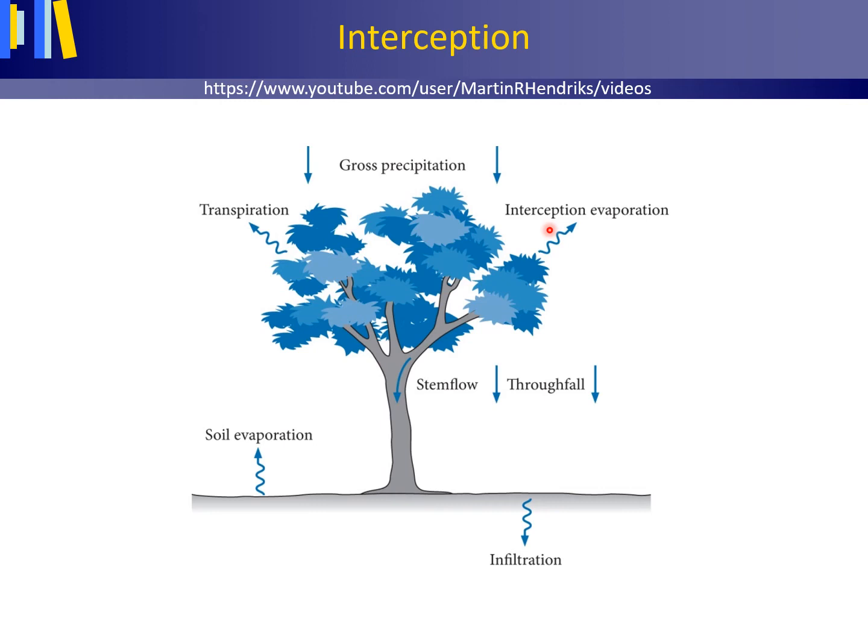Evaporation from the stomata — numerous small pores of living leaves of plants — thus from within the plants, is called transpiration.